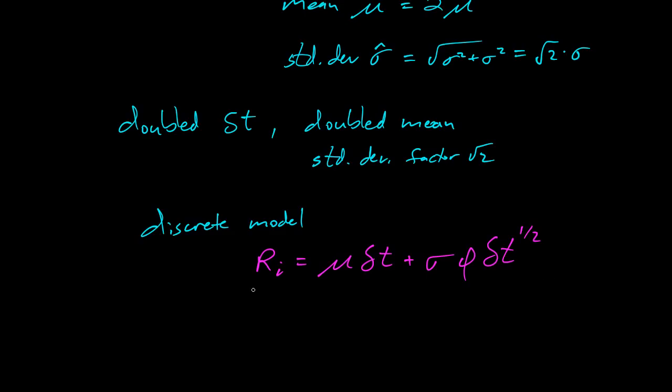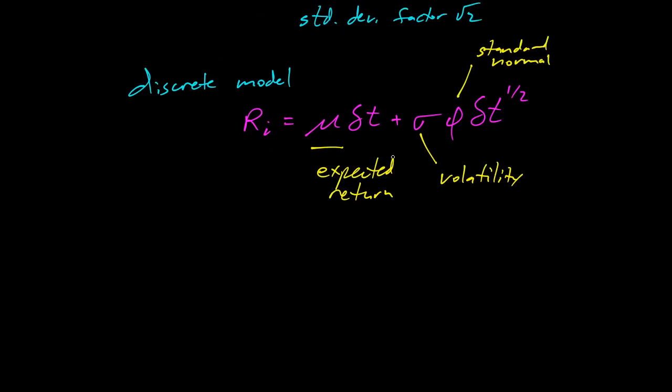We have this mean is actually our expected return. Then our time step here. Our sigma is our volatility. And phi will be a standard normally distributed value. So there it is. There's our discrete model of returns. That's pretty cool.